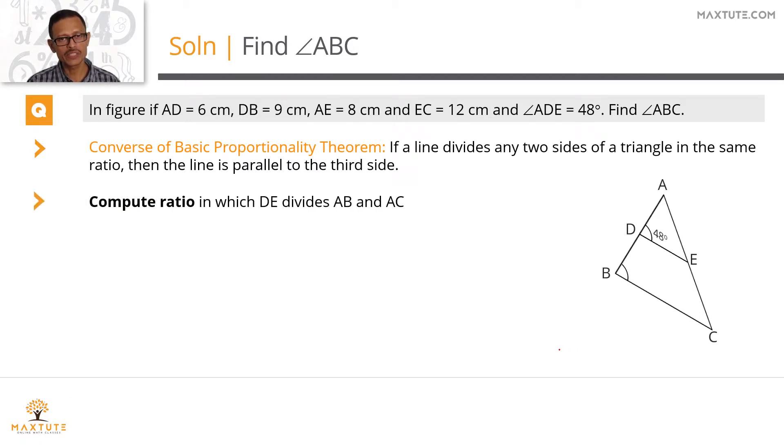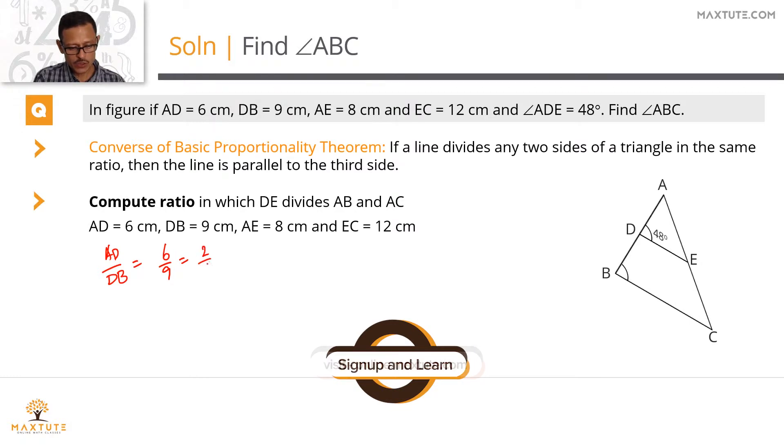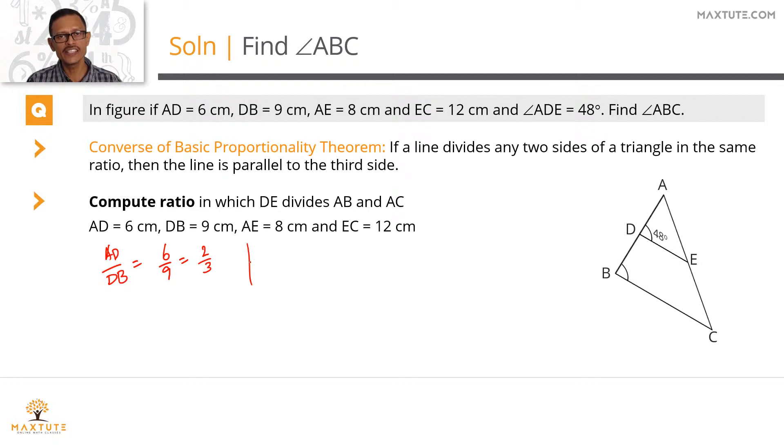Here are the values that we have. Let's compute the ratio in which DE divides AB and AC. AB is divided by D in the ratio of AD and DB, so the ratio becomes AD divided by DB which equals 6 by 9. In its least form, this would be equal to 2 by 3. Let's check out whether this ratio holds good when E divides AC. E divides AC in the ratio of AE by EC. AE measures 8, EC measures 12, so this also reduces to 2 by 3.